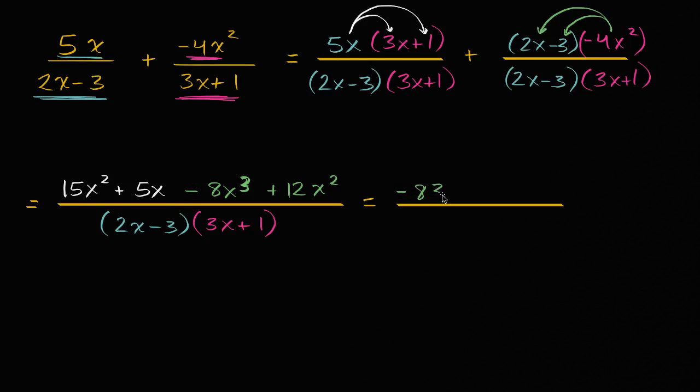And then we have a 15x squared, and we also have a 12x squared. We could add those two together to get a 27x squared. So we've taken care of those two, and we're just left with a 5x. So plus 5x.